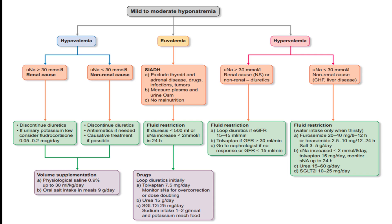Treatment approach for mild to moderate hypovolemic hyponatremia: if urine sodium is greater than 30 mmol/L, it is a renal cause — discontinue diuretics; if urinary potassium is low, consider fludrocortisone 0.05 to 0.2 mcg per day. If urine sodium is less than 30 mmol/L, it is a non-renal cause — discontinue diuretics, use antiemetics if needed, and provide causative treatment if possible.